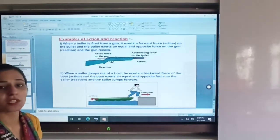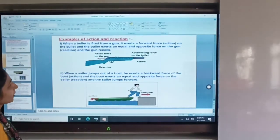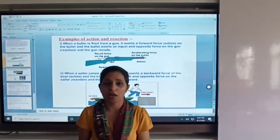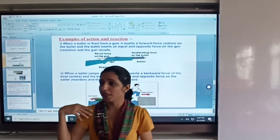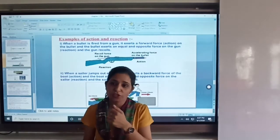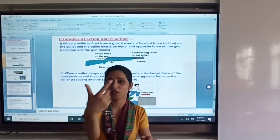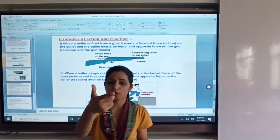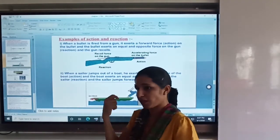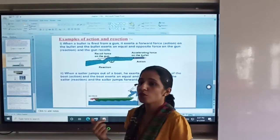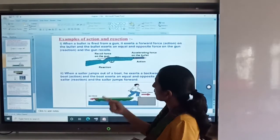Now some examples of the third law. First is recoil of the gun. When we fire a bullet from the gun, we have to apply a force forward on the bullet. The bullet exerts an equal and opposite force backward on the gun. So why do we feel the recoil on our shoulder? This is the application.